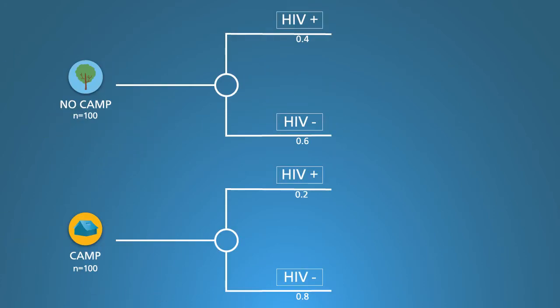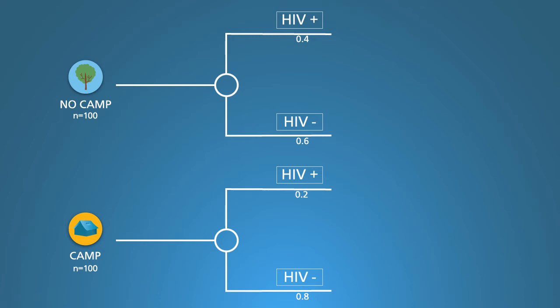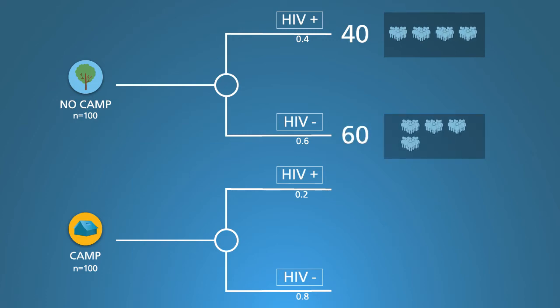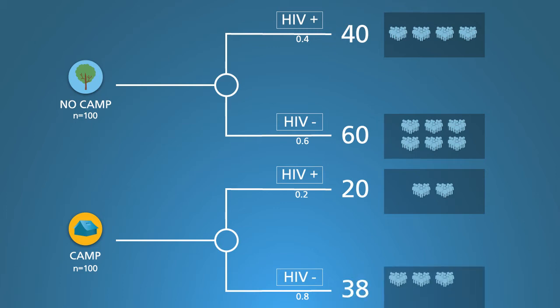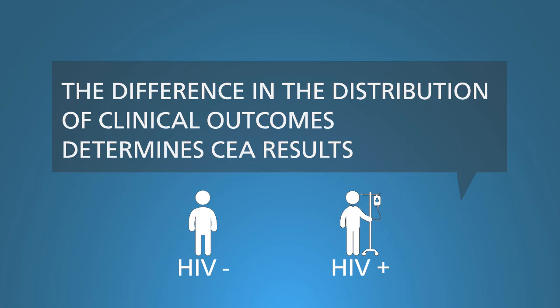Next, we want to calculate how many individuals end up following each path in the tree. Remember that we started with 100 individuals. With no camp, the chance of HIV infection is 0.4, so the number in that path is 40 (100 times 0.4). Similarly, the number not getting HIV infection is 60. Thus, all 100 men follow one of these two tree paths. With circumcision camp, the 100 men are divided into 20 who get HIV infection (100 times 0.2) and 80 who do not. The differences in the distribution of clinical outcomes influences CEA results.